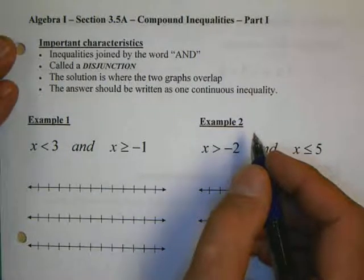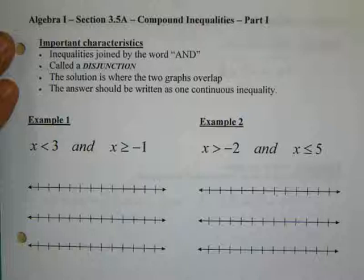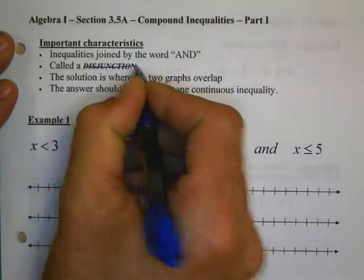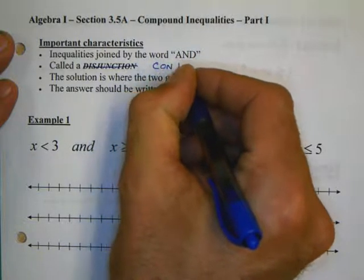Open up your notebooks to Section 3.5, to page 19 in your notes, and let's take a look at this together. First of all, a couple things we need to make sure of. Where it says disjunction on this second line, I'd like you to cross that out, and I'd like you instead to put the word conjunction.